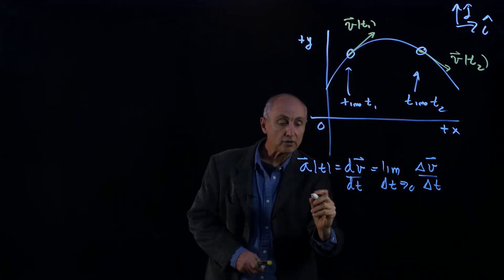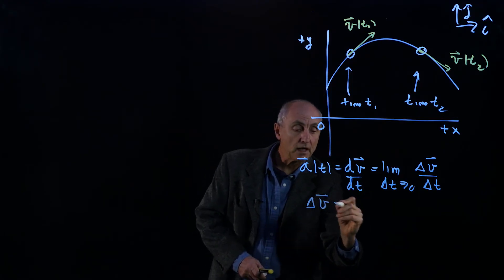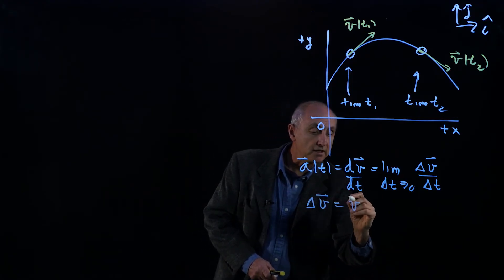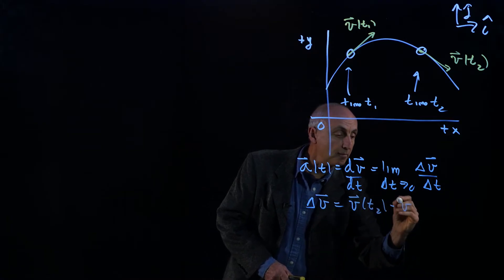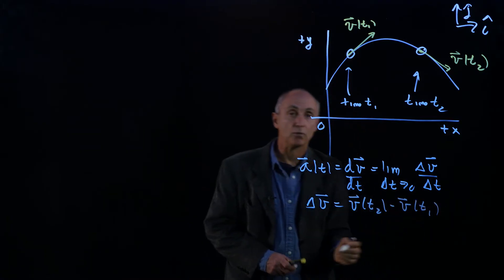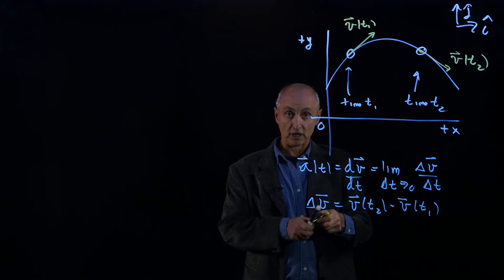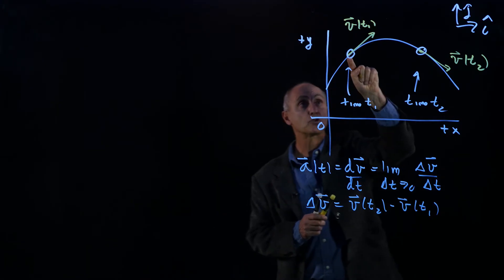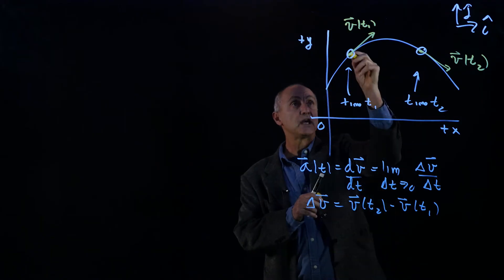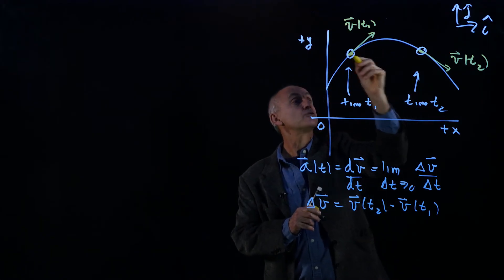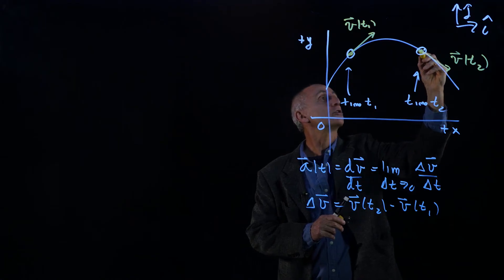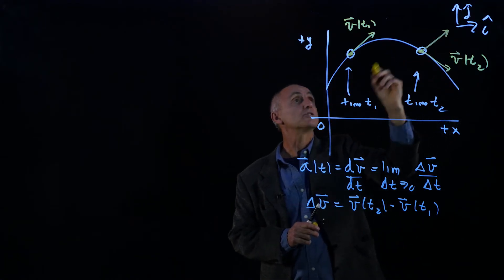But remember that delta v is just v, in this case, at time t2, minus v at time t1. And our principle for subtracting two vectors at different locations in space is to draw the vectors where we put the tails at the same location. So here's a tail of this vector, we're just going to translate that vector in space.